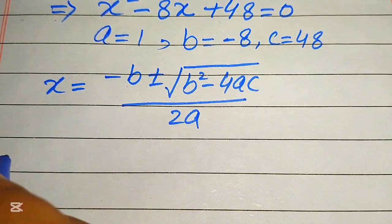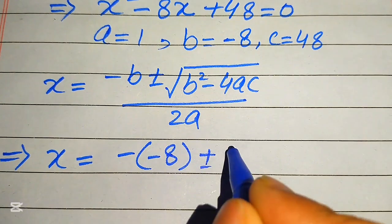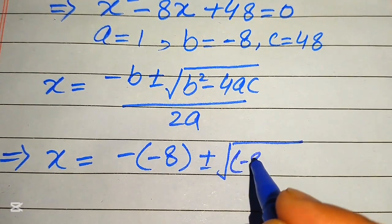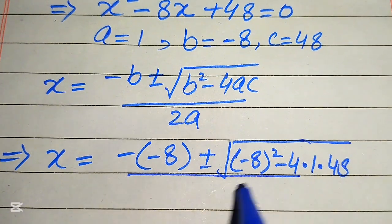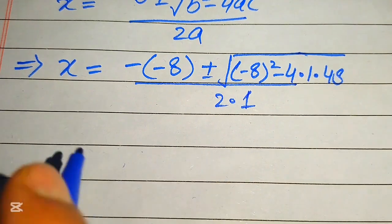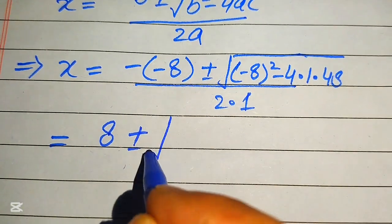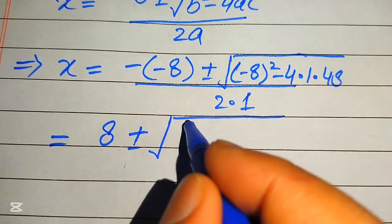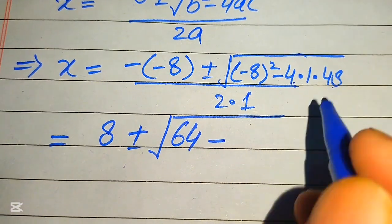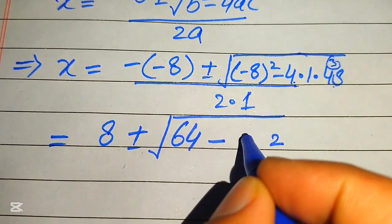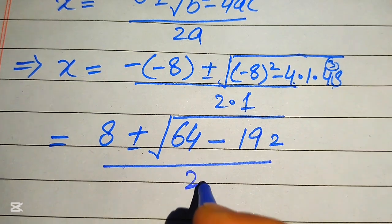Here we put the values of a, b, and c into the formula: x equals minus b — the value of b is minus 8 — plus or minus square root of b squared, where b is minus 8, squared, minus 4 times a which is 1, times c which is 48, all divided by 2 times a which is 1. Now, minus times minus becomes plus 8, and 4 times 48 equals 192, divided by 2.